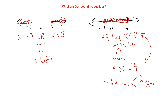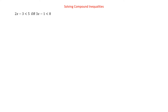So that's the idea of what a compound inequality is. Now let's look at solving some of these. We'll start out with some ORs. So we have two x minus three is less than five, or three x minus one is less than eight. We're going to solve these separately — it's just like solving an inequality, we just have to do it twice. For the left-hand one, the first thing we're going to do is add three to both sides. So we end up with two x is less than eight, divide by two, x is less than four.